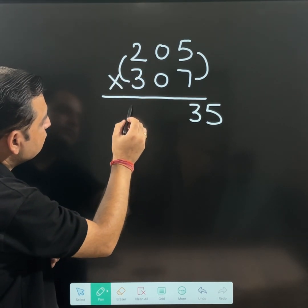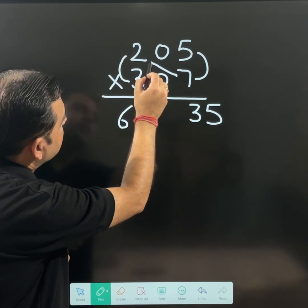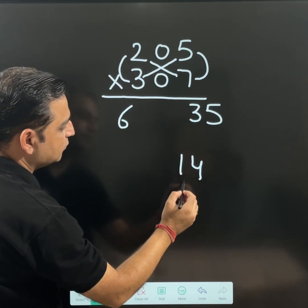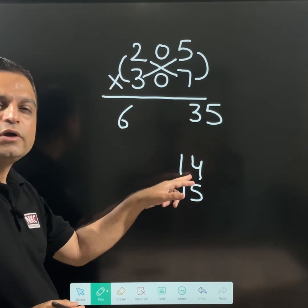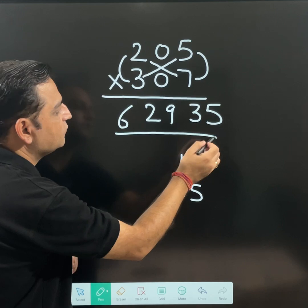Now cross multiply. 7 multiplied by 2 is 14. 3 multiplied by 5 is 15. If you add 14 and 15, you will get 29. So this is the answer.